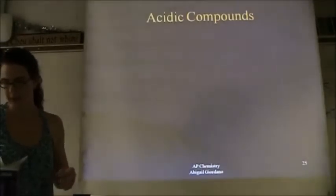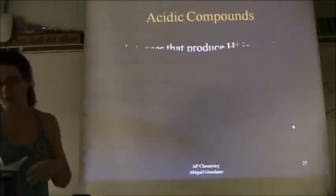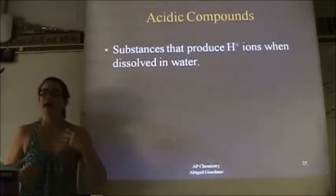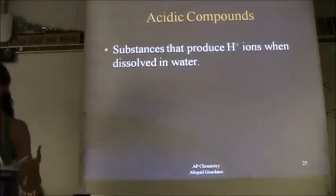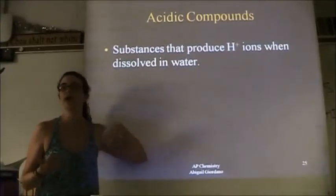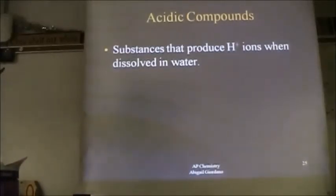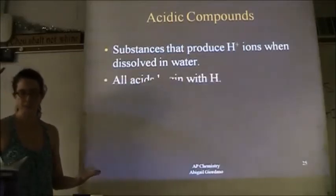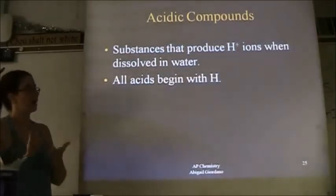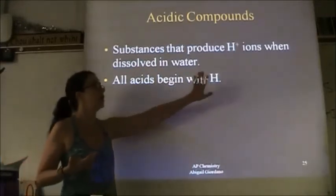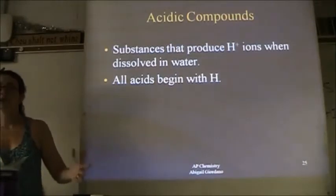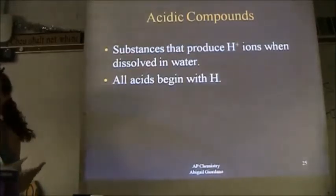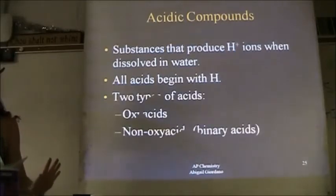There is another set we need to look at: acidic compounds. First, let's make sure we all understand what an acid is by definition. An acid is something that, when put in an aqueous environment — meaning dissolved in water — will release hydrogen ions. That is the definition of an acid. Acids have hydrogen in them, and most of the acids you'll encounter have the hydrogen right at the beginning of the formula. There are two types of acids.